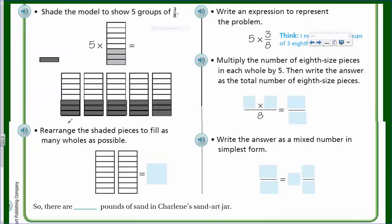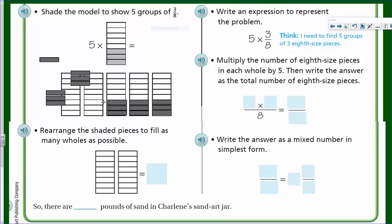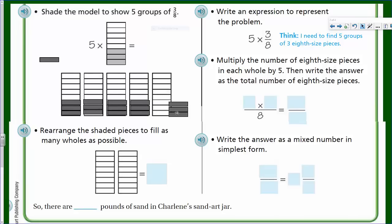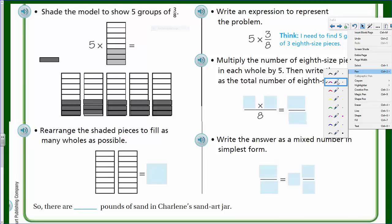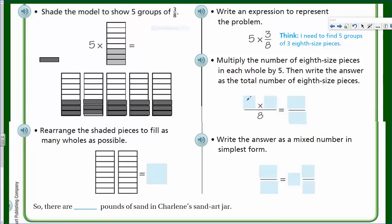Write an expression to represent the problem: five times three-eighths. Think — I need to find five groups of eighth-sized pieces. I placed these here already. So you see there's three-eighths, three-eighths, three-eighths — you need to shade that in, because that represents the three-eighths of each bag of sand. Multiply the number of eighth-sized pieces in each whole by five, then write the answer as the total number of eighth-sized pieces. We have five bags multiplied by three-eighths, or five times three-eighths.